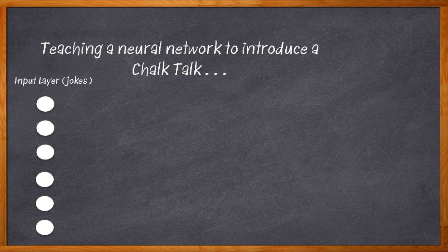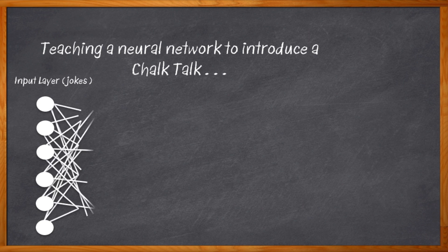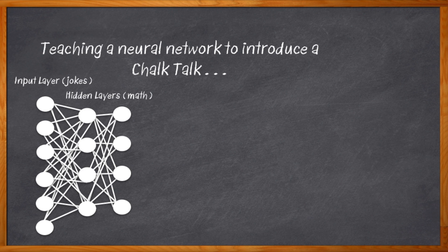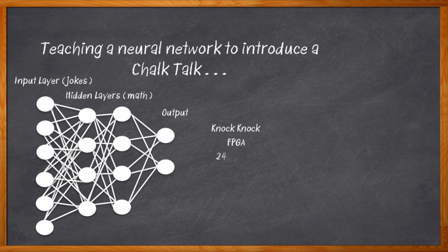Can't forget that one about industrial Ethernet — that one was really not funny. We need a wide range of inputs. And then next are the weights, and then the hidden layers — lots of math there. And then the outputs. Well, this one might not be so foolproof. Maybe this isn't as easy as it seems. Maybe chalkboard introductions aren't ready for neural network prime time.